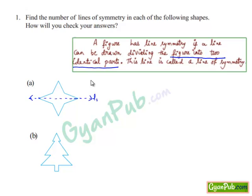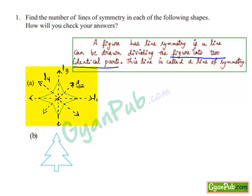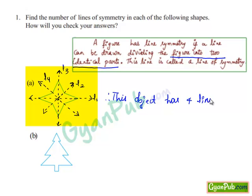If we see all other sides, we get four lines of symmetry. For each line of symmetry, the line is dividing the figure into two identical parts. Therefore, this object has four lines of symmetry.